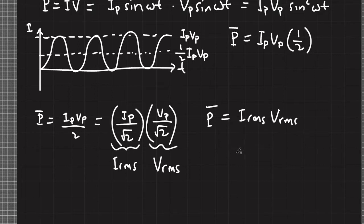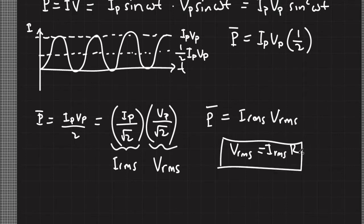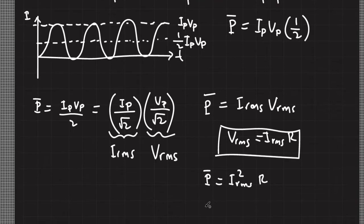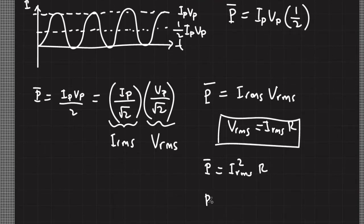When you have alternating current, it is not usually represented by its peak value like peak voltage or peak current — a voltage signal is usually represented by its root mean squared value. We can rewrite Ohm's law in terms of root mean squared values like V RMS. Since resistance is constant, we can write Ohm's law in terms of RMS values, and we could rewrite average power in terms of RMS current alone or in terms of RMS voltage.